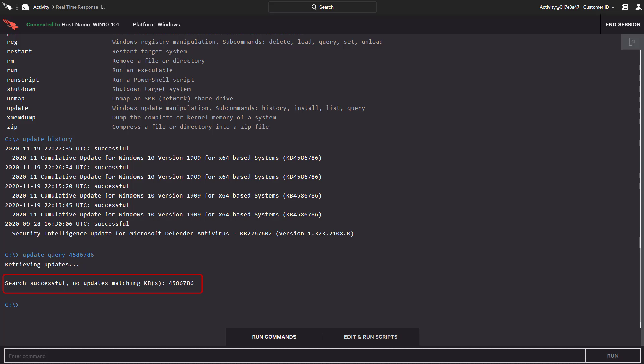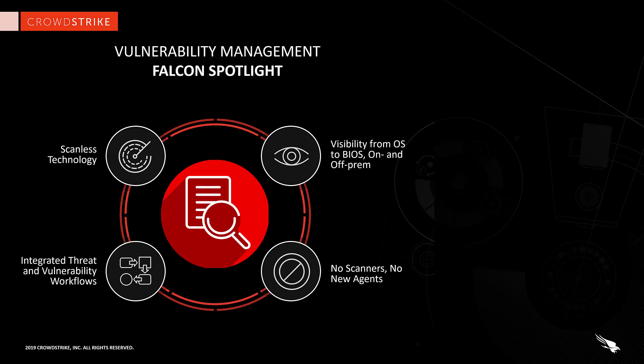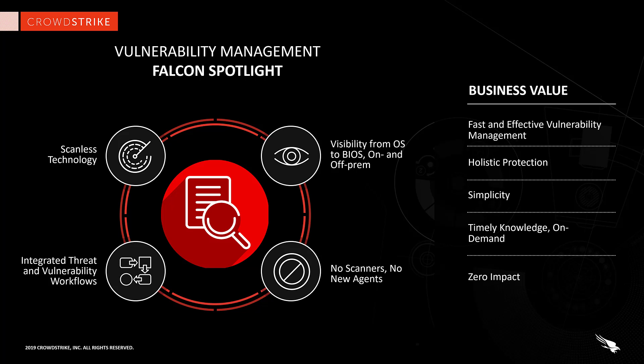When there is a trending vulnerability that cannot be addressed quickly enough through the normal patch process, Spotlight's Patch Now feature enables users to easily and surgically remediate vulnerabilities, reducing the attack surface and proactively decreasing the chance of being breached due to unpatched vulnerabilities.